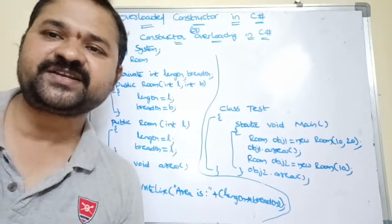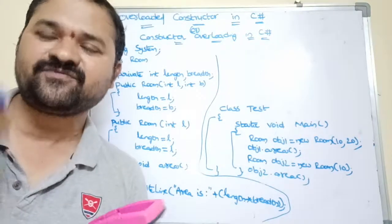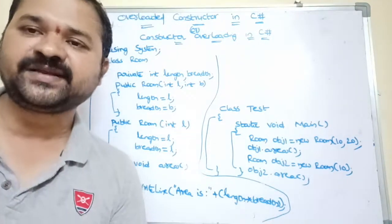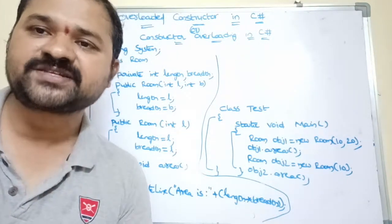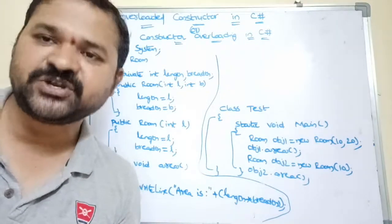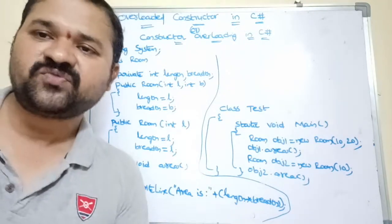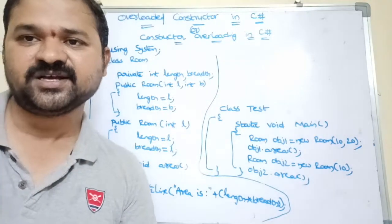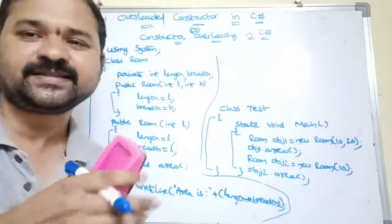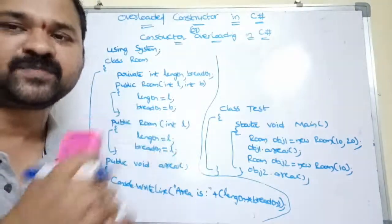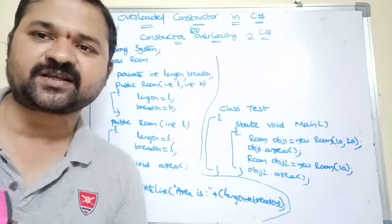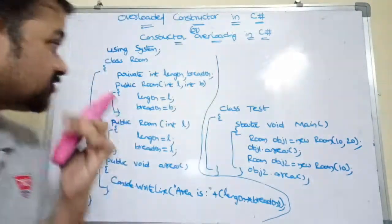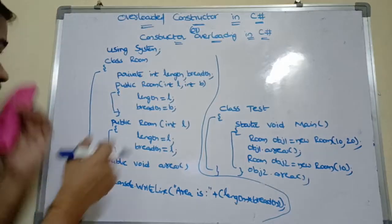For example, the first constructor may contain one argument, the second constructor may contain two arguments, the third constructor may contain zero arguments, and the fourth constructor may contain seven arguments. So giving the same name to the constructor with different number of arguments. Let's see this example.